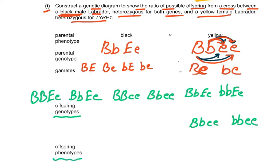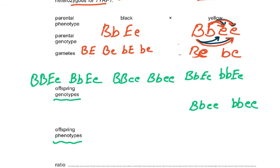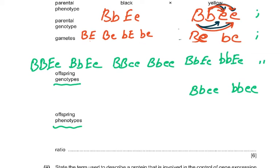Now you have to match the offspring genotypes with the offspring phenotypes, because this question is marked per line. If you got the parental phenotype line correct, that's one mark; parental genotype correct, another mark; gametes correct, two marks; and offspring genotypes and ratio correct for the remaining marks — six marks total.